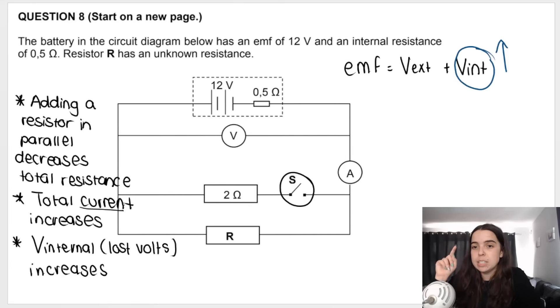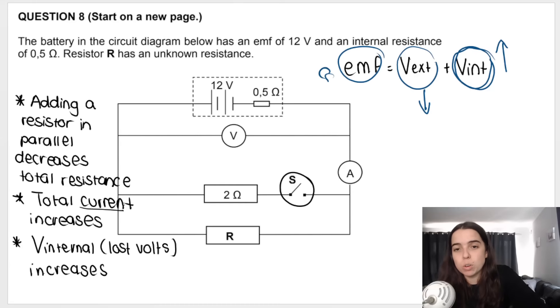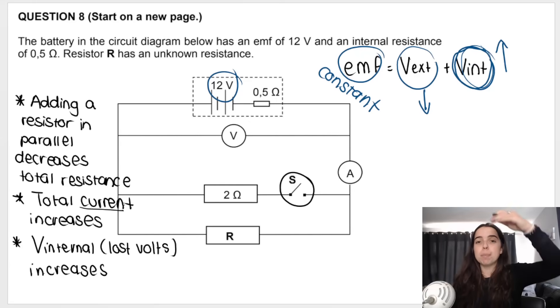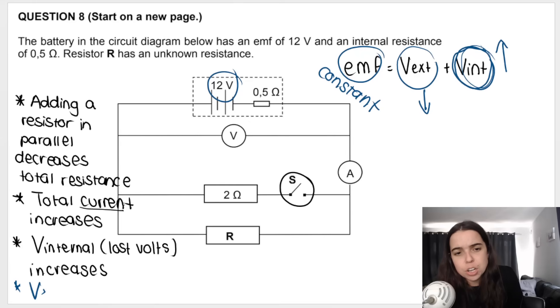Why is that important? Because if lost volts increases, V external decreases. They do the opposite. So V internal, if this goes up, V external must go down. Why? Because EMF is always going to be a constant. That means that EMF is never going to change. 12 volts, EMF will be 12 volts. So if I have to make V internal bigger, bigger, bigger, V external will have to get smaller. And why do I care about V external? Because V external is the reading on the voltmeter. And that is what the question asked.